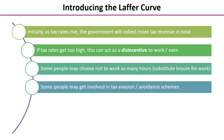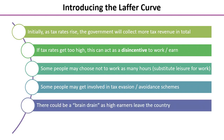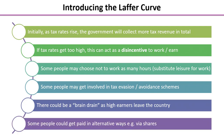Some people might get involved in tax evasion or avoidance schemes — in other words, do whatever they can to not pay the tax that is owed. There might also be what we call a brain drain, where high earners choose to leave the country and move to one with a low tax system. And some people might choose to be paid in alternative ways, such as being given shares or options instead of a salary.